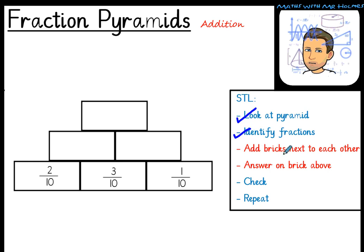Now we need to add the bricks next to each other. I like to put a little add sign in between each brick to remind me. Two tenths add three tenths. That's five tenths. Remember we add the numerators but not the denominators. And the answer goes on the brick above, above the add sign here. We said that equaled five tenths.